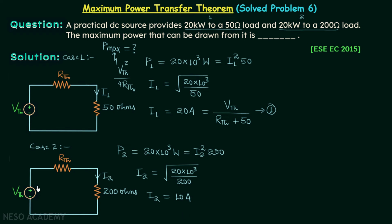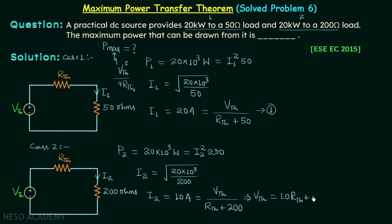Applying KVL in this loop gives I2, which is 10 amperes, equal to Vth divided by the quantity Rth plus 200. Rearranging gives Vth equal to 10 times Rth plus 10 times 200, which is 2000. So Vth equals 10·Rth plus 2000. This is equation number 2.